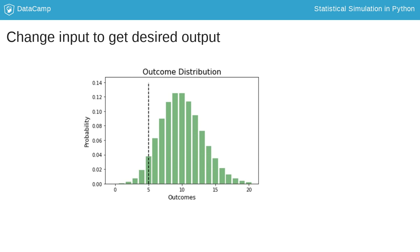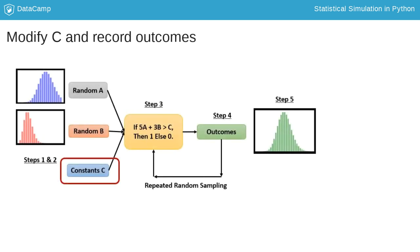For instance, we might want to find the lowest value of the constant C for which the mean of the outcome distribution is 5. In this case, all we need to do is iteratively keep changing the value of the constant C and record the outcomes.